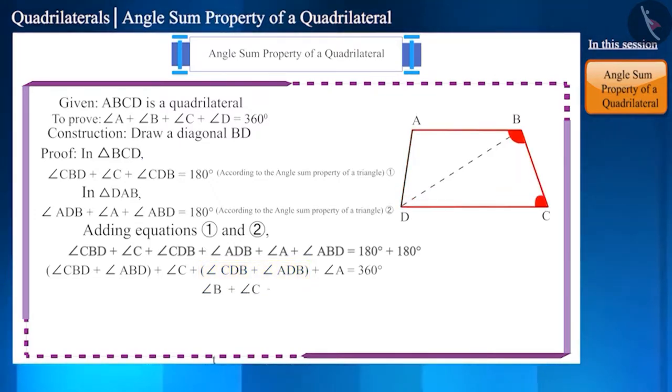Angle B plus angle C plus angle D plus angle A equals 360 degrees, or angle A plus angle B plus angle C plus angle D equals 360 degrees. And thus we prove that the sum of the four angles of any quadrilateral is 360 degrees.